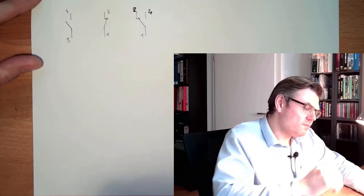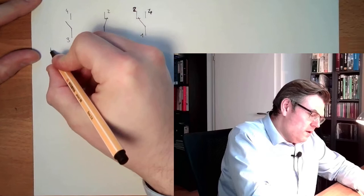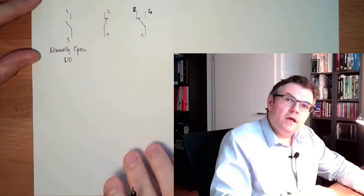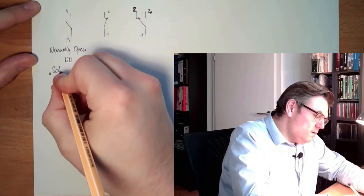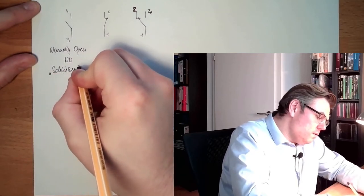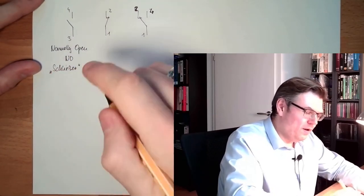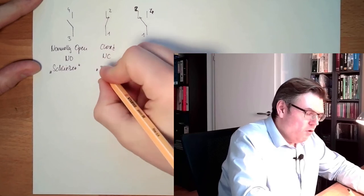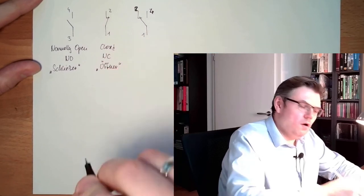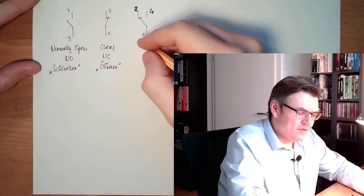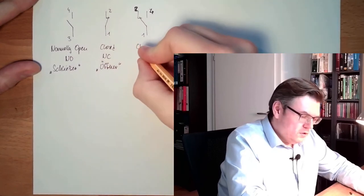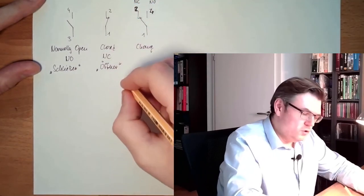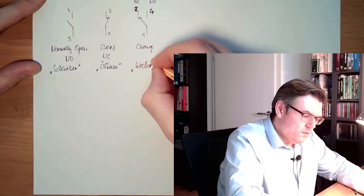One or three and four need to be connected. This type here is called Normally Open, or NO contact. In German this is called Schließer — closer. And this here is Normally Closed, or NC contact — in German, Öffner, opener. And this here is a changing contact. We have one normally closed contact and one normally open contact — in German it's Wechsler, a Wechsler contact.